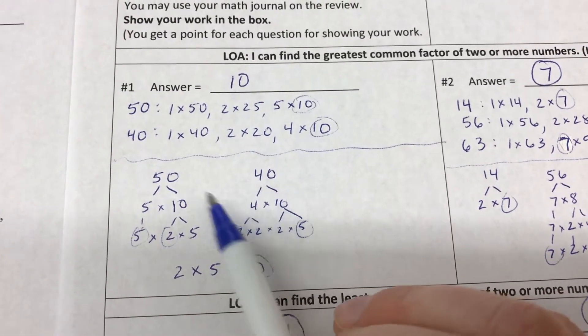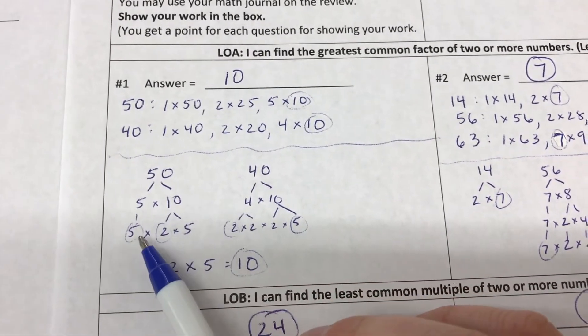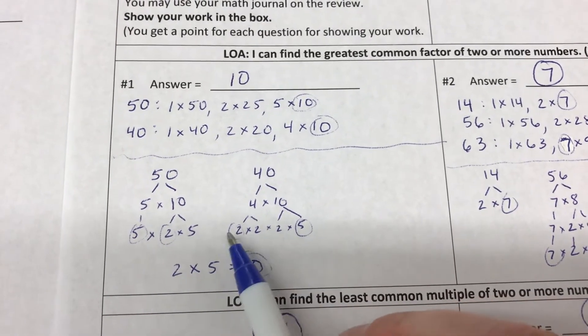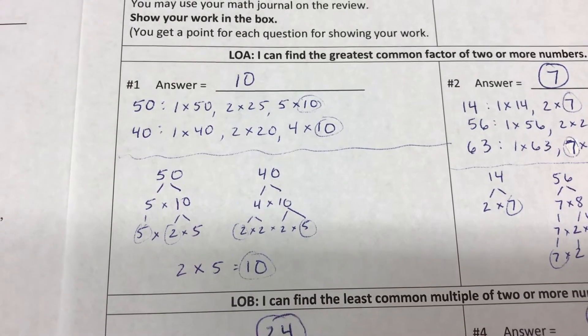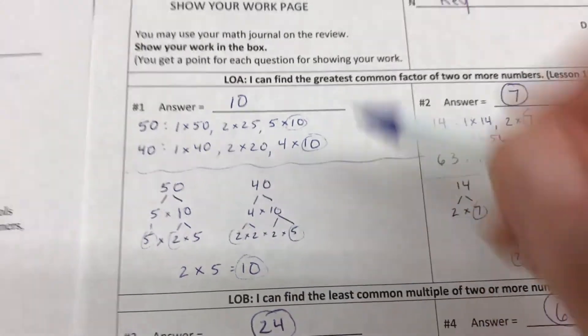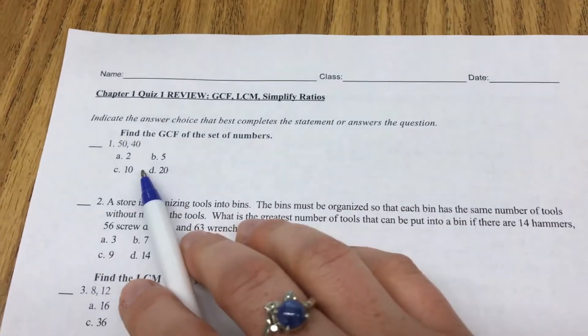If you did a factor tree, you got down to these prime factors and they had 2 and 5 in common, so 2 times 5 is 10. The answer to number 1 is 10, which would have been C.